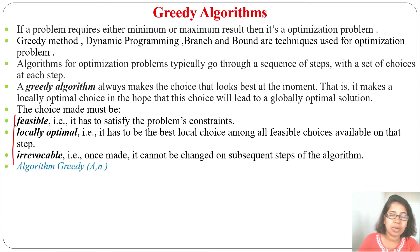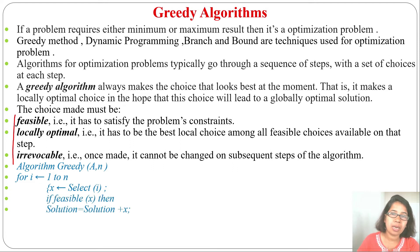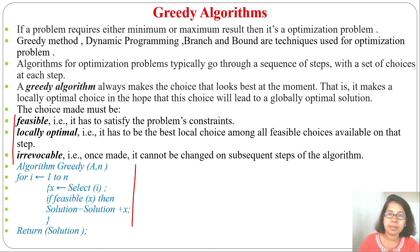In the greedy algorithm, given an array of n elements, for i from 1 to n, we select element x, check whether it is feasible or not. If feasible, we add x to the solution. We return the solution. We check each element one by one — if it is feasible we add it to the solution; if not feasible we skip it and move to the next element.